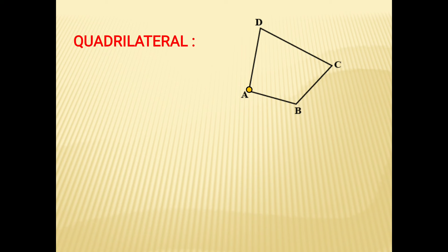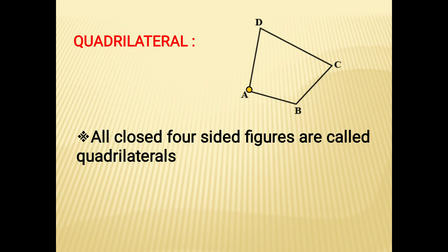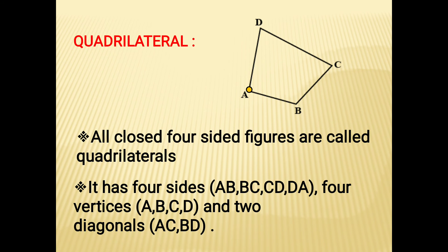The next shape is the quadrilateral. This is a quadrilateral. All closed four-sided figures are called quadrilaterals. It has four sides — AB, BC, CD, and DA — four vertices labeled A, B, C, and D, and two diagonals.